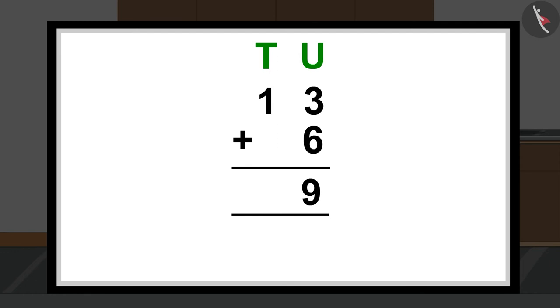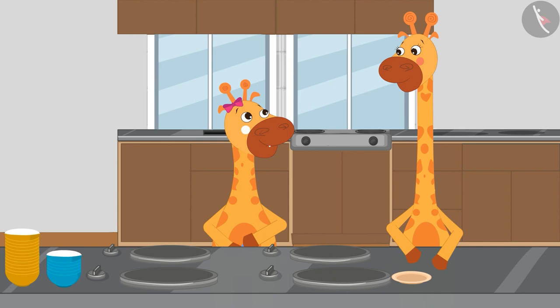Next, I will add the numbers written in the tens section. But here, there is only one written. This is why I will write 1 under the tens section like this. Just like that, 13 plus 6 is equal to 19. Mom, we have 19 bowls in total.